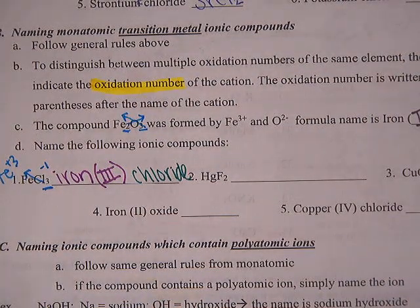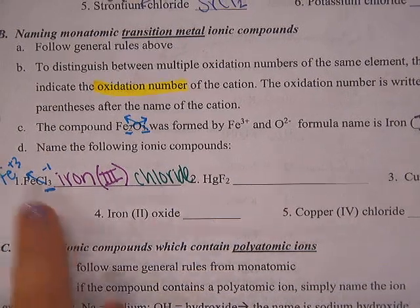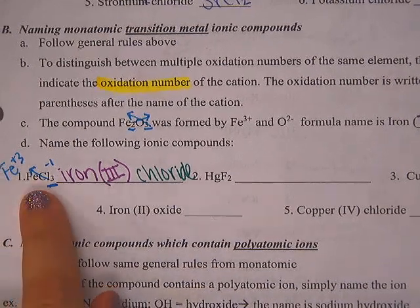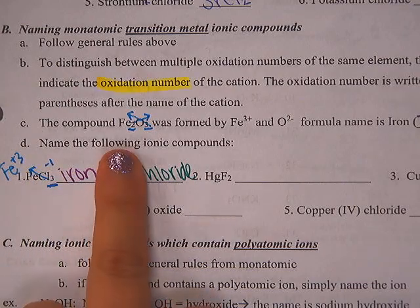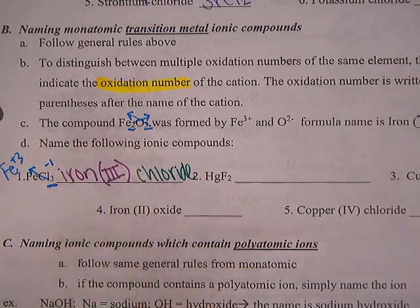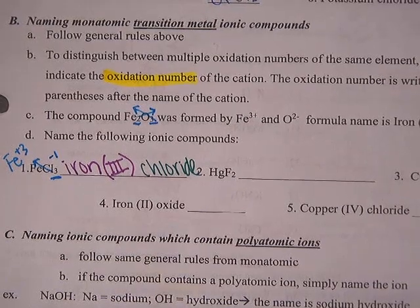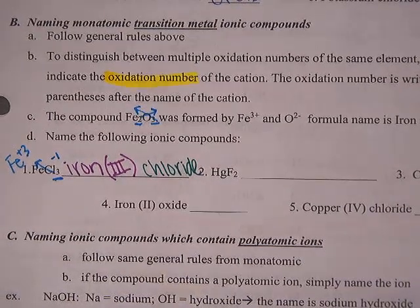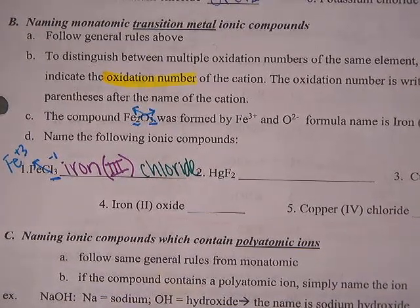You can check if you named it correctly by going back and forth between the formula and the name. If I just called it iron chloride without the Roman numeral, you wouldn't be able to write the formula from that, because you don't have the charge given to you.